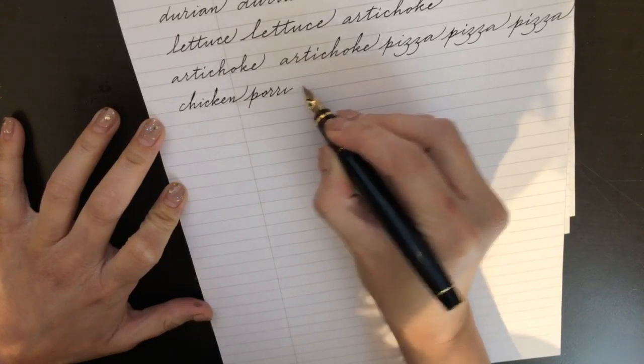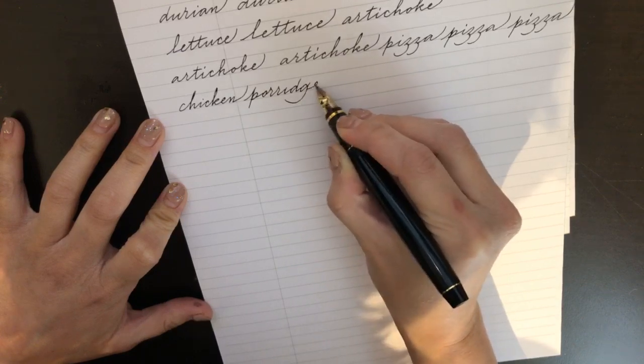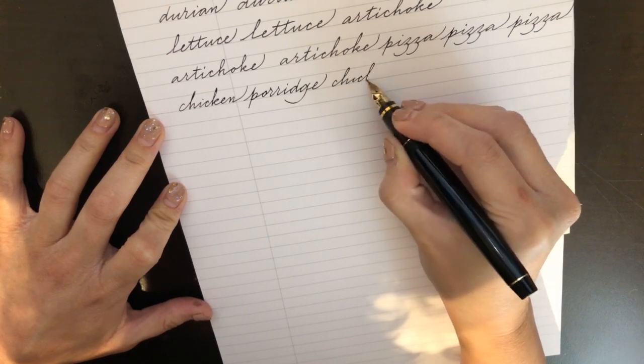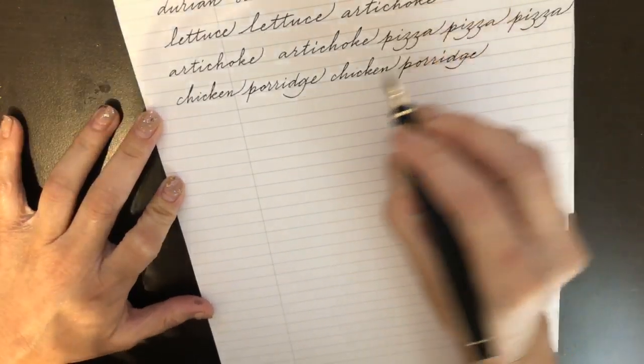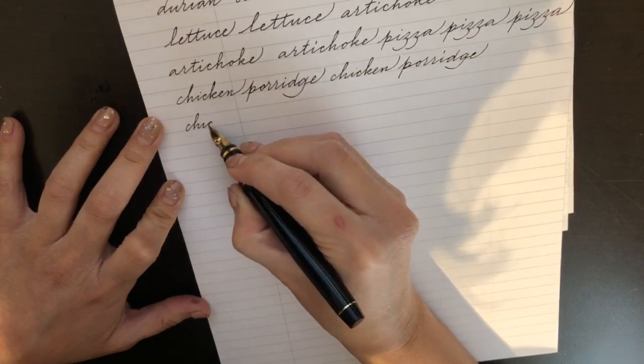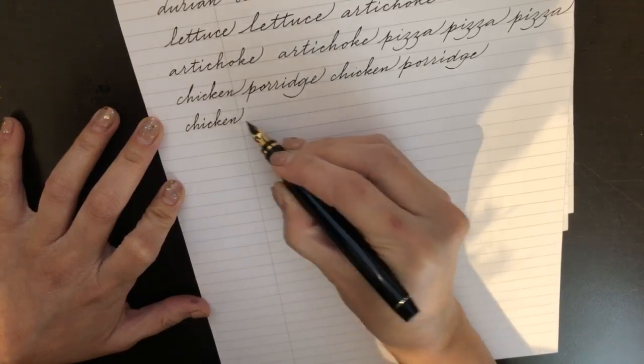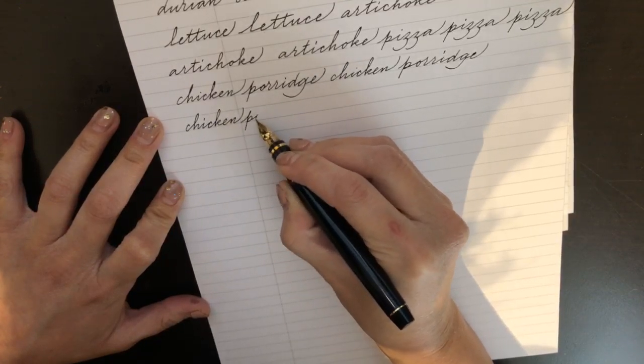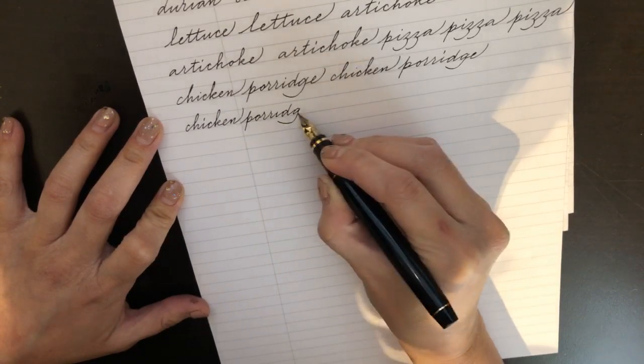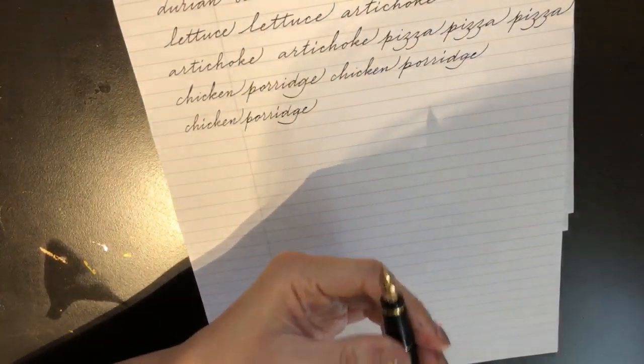I've got some leftover chicken porridge defrosting. So you can see that I'm spacing out my writing a lot. Because I feel that's always a cheat to writing better. When in doubt, space it out.